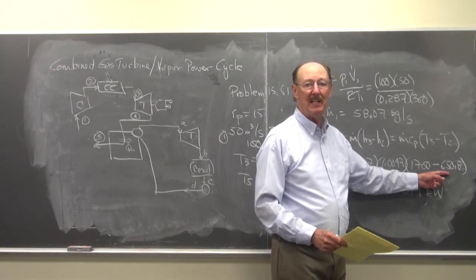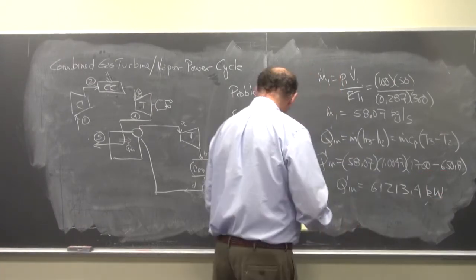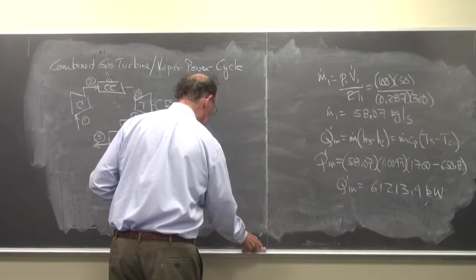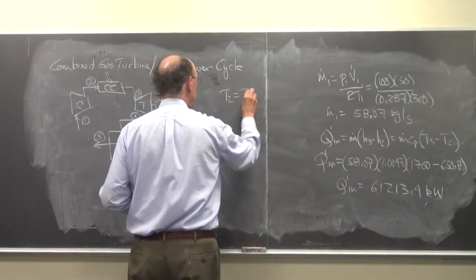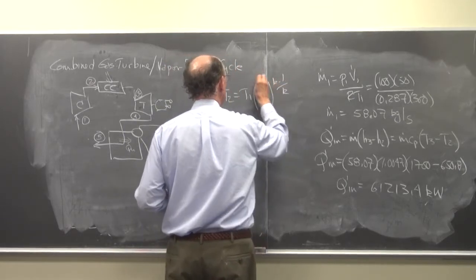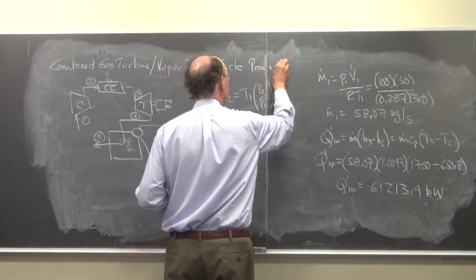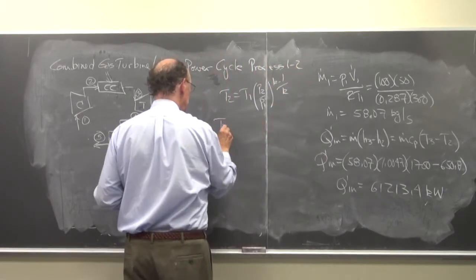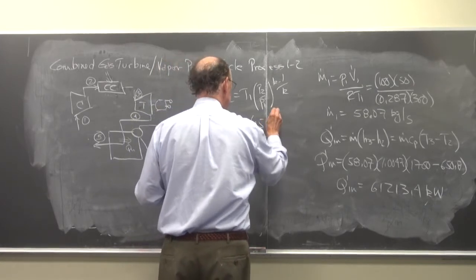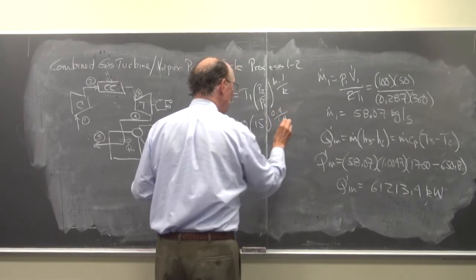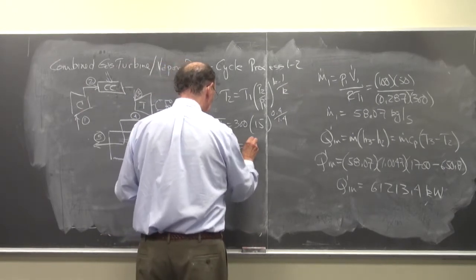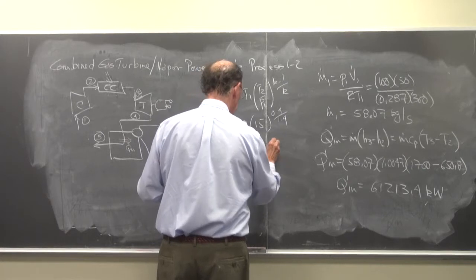So what we had to do is use the isentropic processes between 1 and 2. So T2 is equal to T1 times P2 over P1 to the k minus 1 over k. So this is for process 1 to 2. So T2 is equal to 300 times 15 to the 0.4 over 1.4. We're using the properties of air, as you can see. So I get that T2 is 650.8 degrees K.